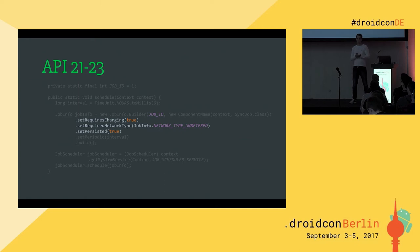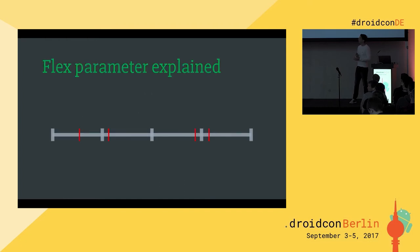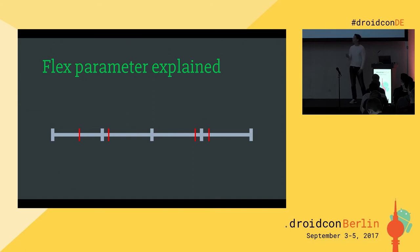With Android Nougat a new `setPeriodicic` method was introduced with a flex parameter. Before that we only had the interval parameter. The requirement for a periodic job is that it runs once during each interval. The flex parameter stretches the interval: without it, the job could run at the beginning of one interval and at the end of the next, making the actual gap longer than the interval. The flex parameter reduces the time frame for the job to run and is very helpful if we want to implement things as effectively as possible.